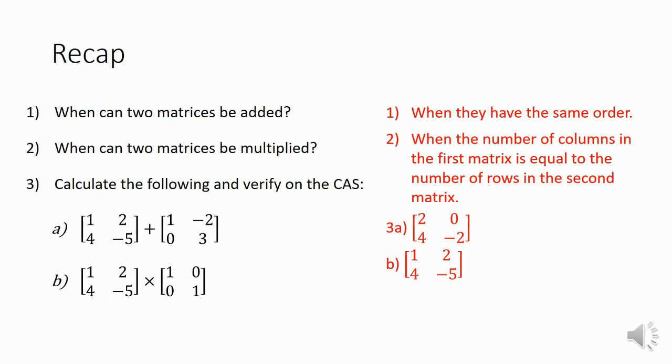Something to note here in question 3b is that that second matrix is the identity matrix. And what you'll notice when you multiply them out is that multiplying by the identity matrix doesn't do anything. You just get the matrix that you started with. And that's why it's called the multiplicative identity.